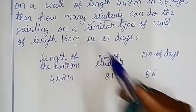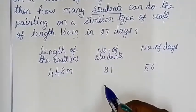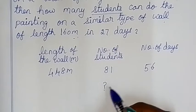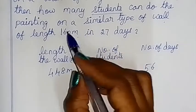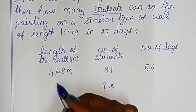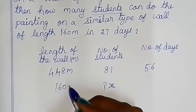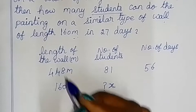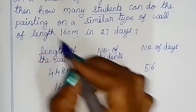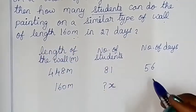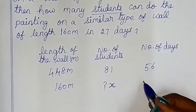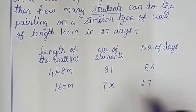The number of students in the second row is what we need to find. The length of the wall is 160 meters, and it is 27 days.